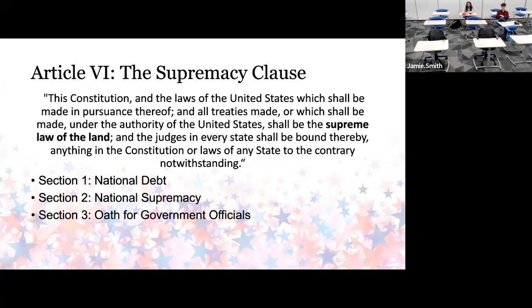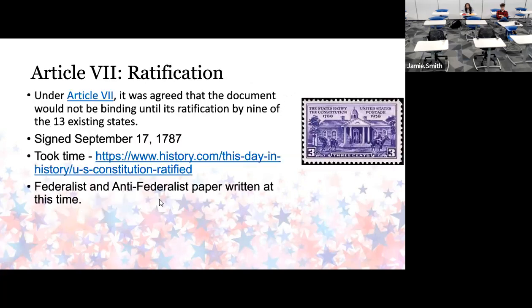The Supremacy Clause also allows for national debt. States can't carry debt — states have to balance their budgets every year — but the nation can carry debt because they control the national bank. We all have one currency: your $5 bill works in Georgia, New Hampshire, or California because the national government controls the money. That wasn't always true, but it is now. Then in 1787 the Constitution was actually ratified.